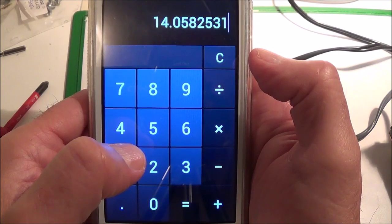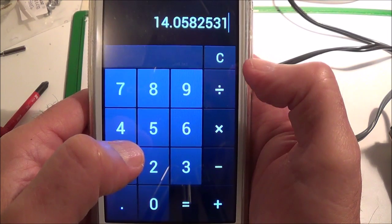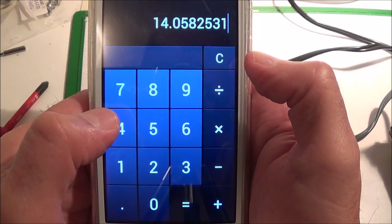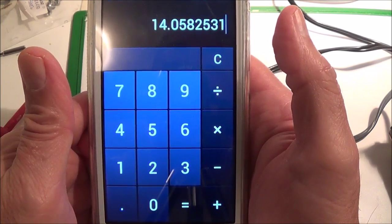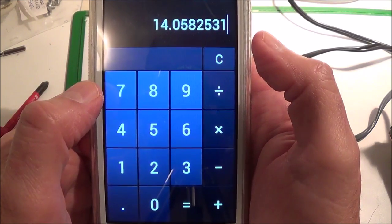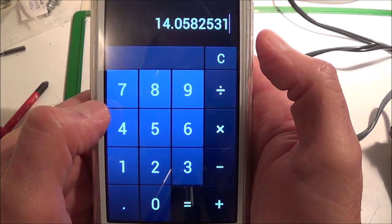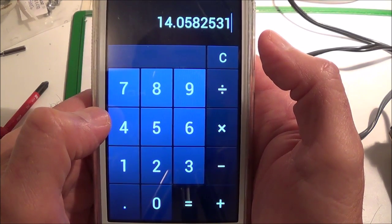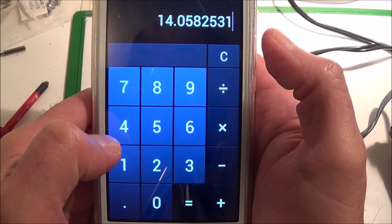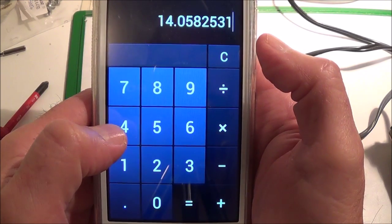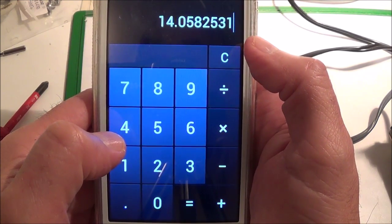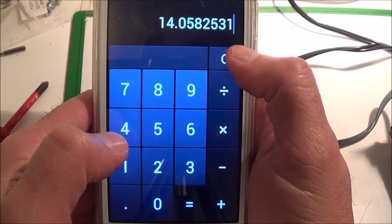That's with both channels driven at the same time and feeding in a 1000 hertz sine wave. And actually the receiver is actually rated at 14 watts per channel, I think both channels driven. So it looks like this is fairly accurate.